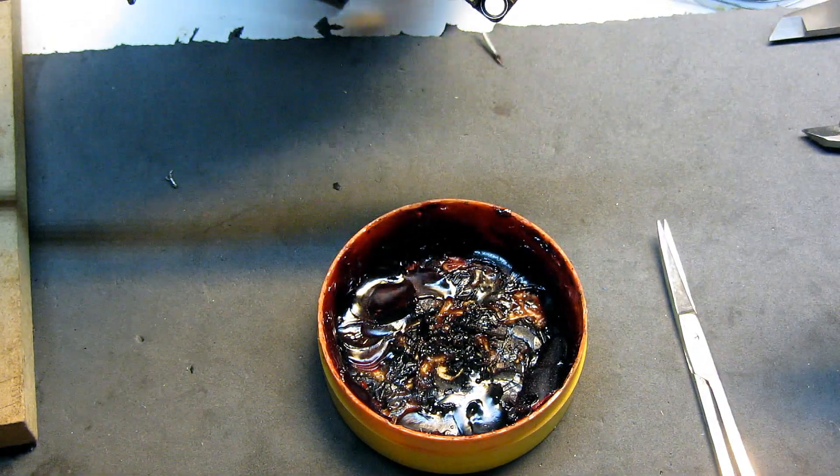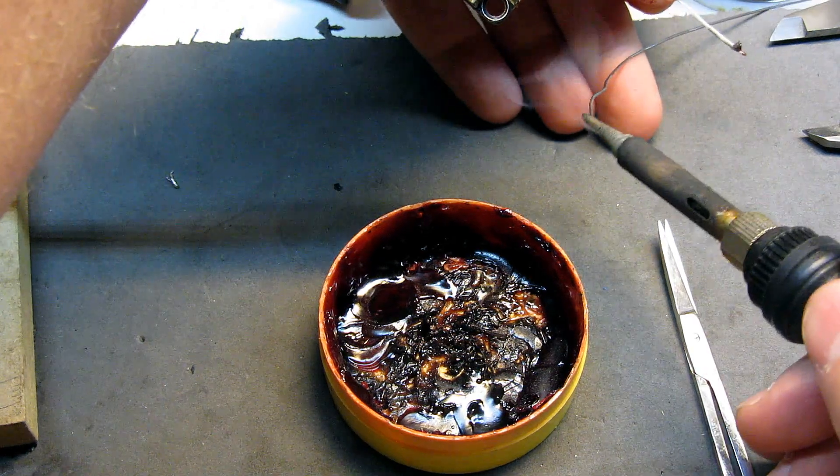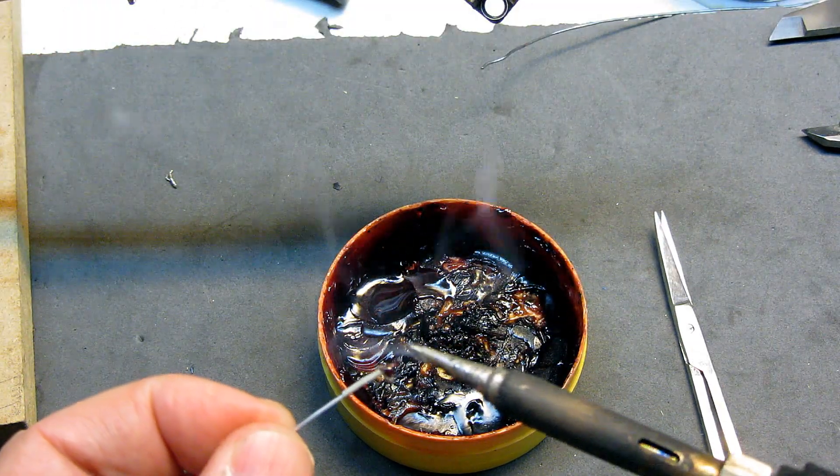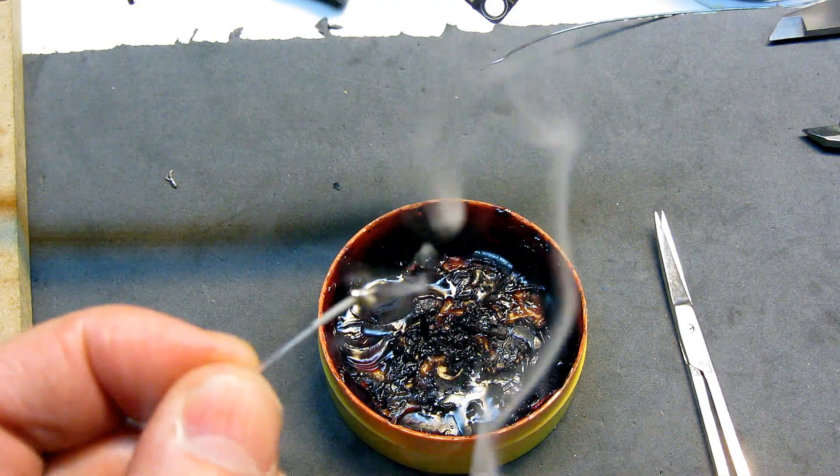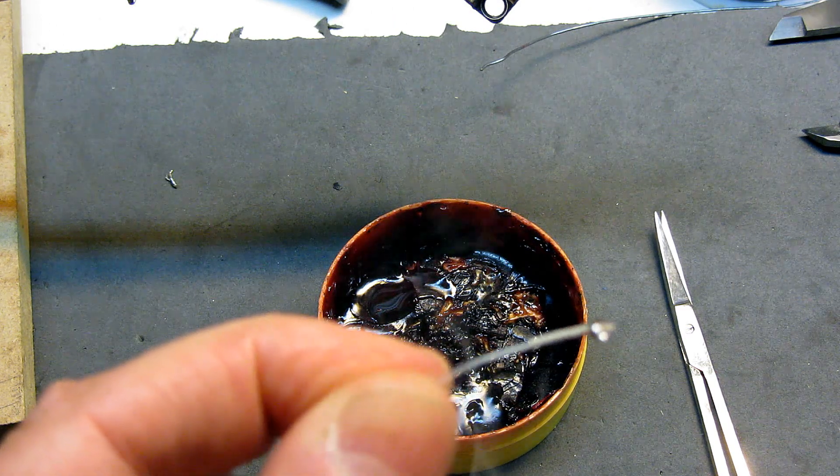And then we're going to take just a little bit of solder on the soldering iron. What I like to do is just touch it to it and it's going to wick right into it. You can see that it just wicked right into it.